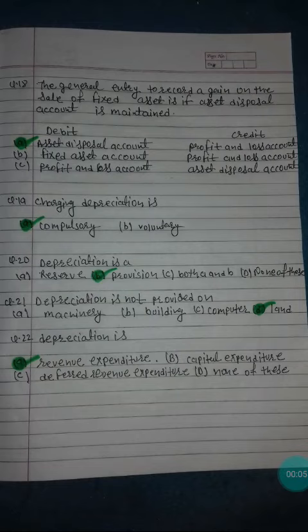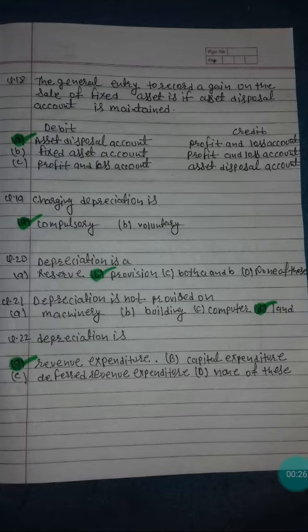The general entry to record a gain on the sale of fixed assets, if an asset disposal account is maintained: Option A - Debit Asset Disposal Account, Credit Profit and Loss Account. Option B - Debit Fixed Assets Account, Credit Profit and Loss Account. Option C - Debit Profit and Loss Account, Credit Asset Disposal Account. Option A is the correct answer.